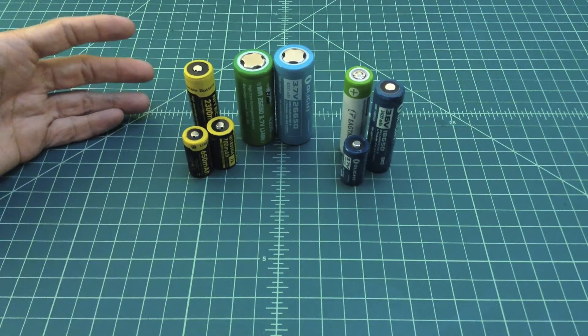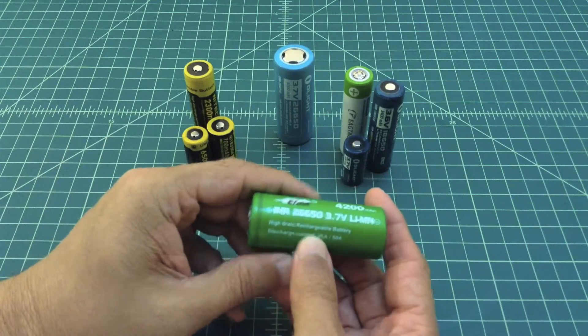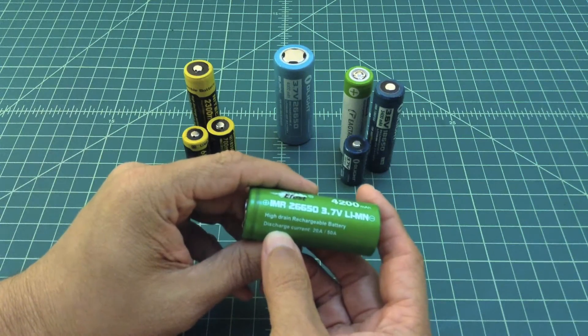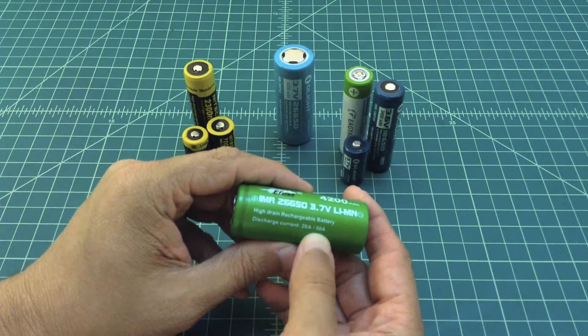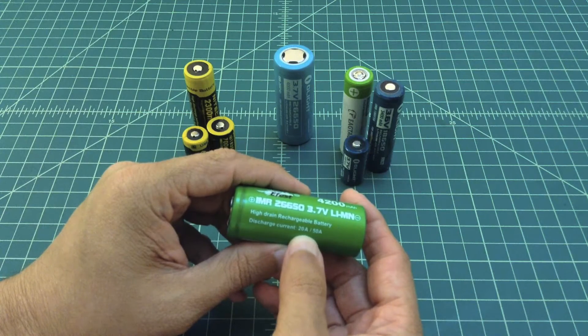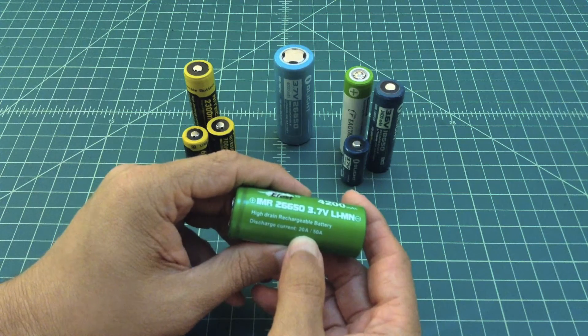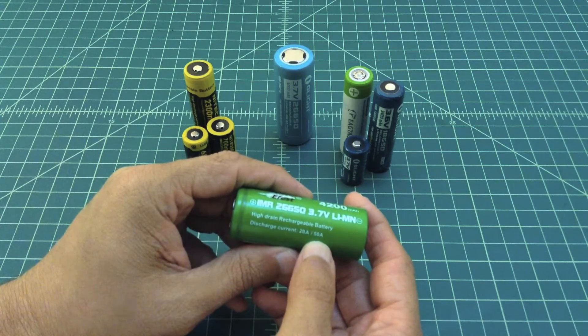I really just wanted to talk about that. When you have an IMR battery, it measures dispersion in terms of amperage. When you see a battery, it might say 20 amps and 50 amps, and what that means is 20 amps continuous discharge rate and 50 amps at a pulse rate.